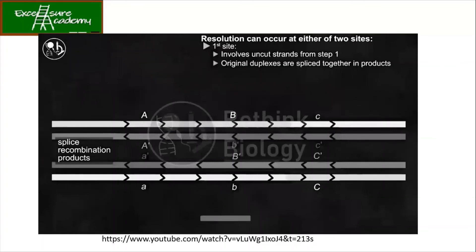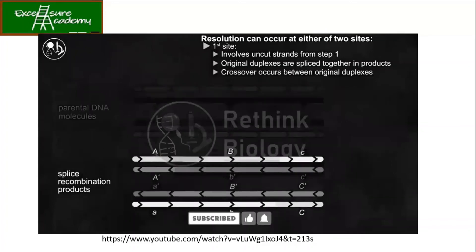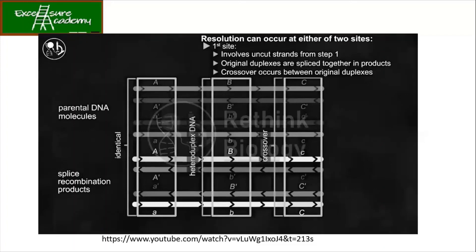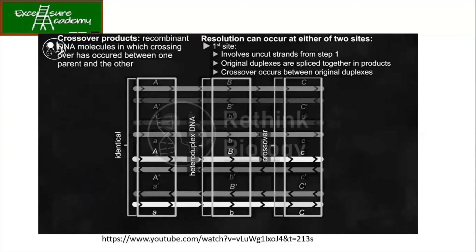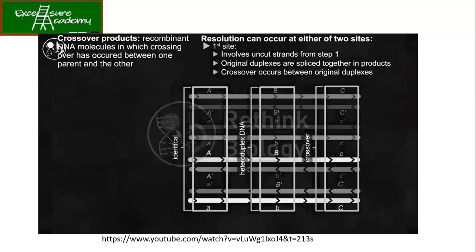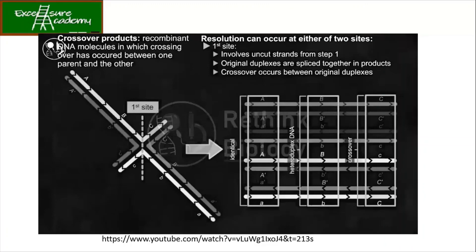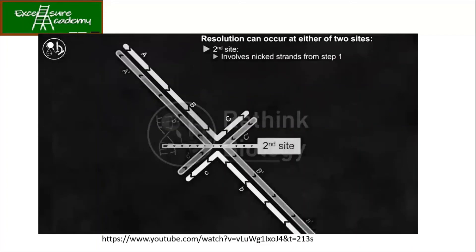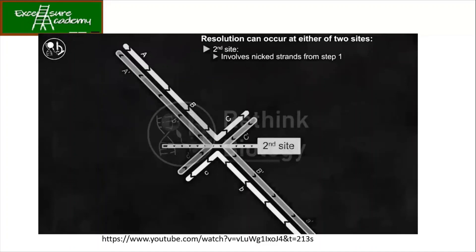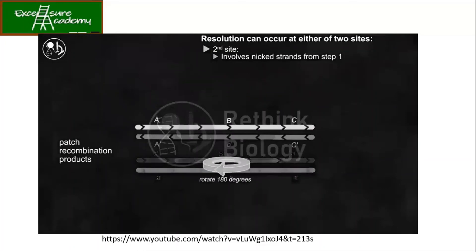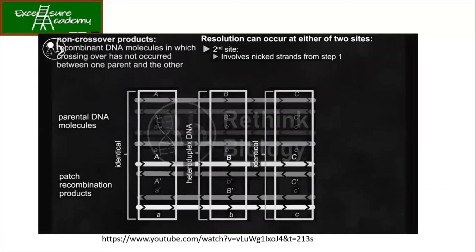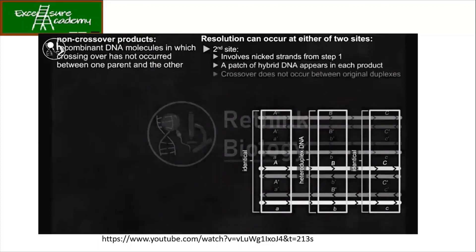The resulting duplexes will have a region of one pair of identical alleles from one parent, a region of heteroduplex DNA, and a pair of alleles from the other parent. In the last region, the C allele has switched from one duplex to another — this is called the crossover region, and thus the product is also called a crossover product. The second cut can be the pair of strands that were nicked during the first step — they have mixed colors. As a result, the product has a patch of hybrid DNA, so they are called patch recombination products, also known as non-crossover products, as the A and C alleles have not changed their position.